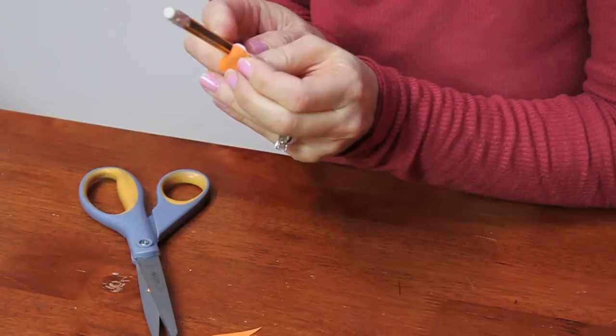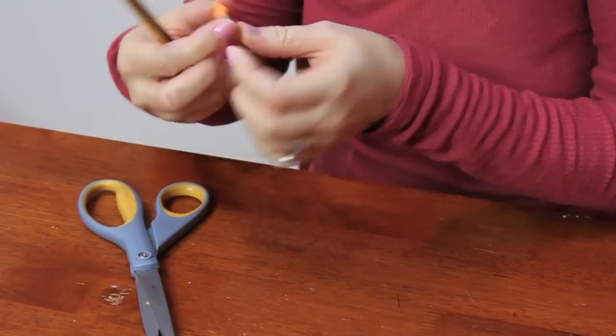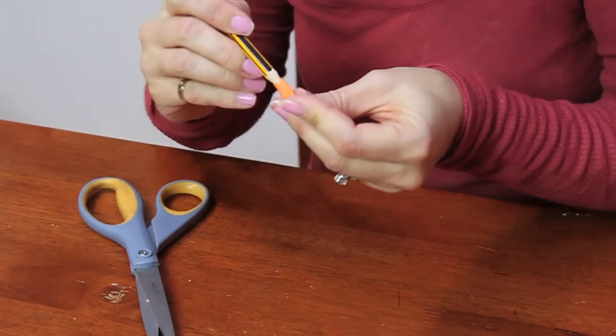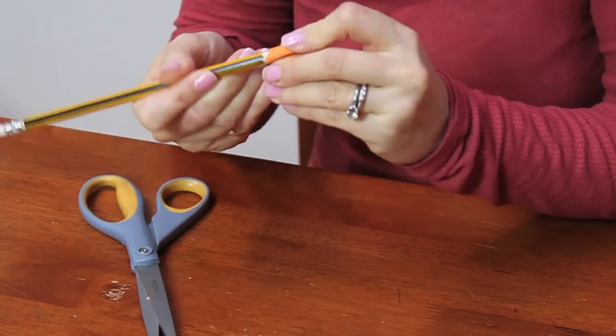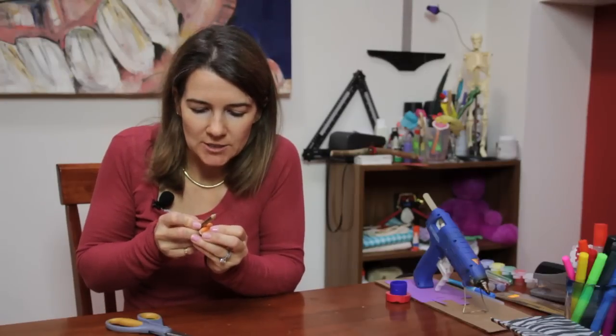Sometimes it's easier if you use a shorter strip. My strip is a little long. If you need to, you can put the pencil point inside of the heart and push the two sides out. Then you can push it down again, and you should get the heart.